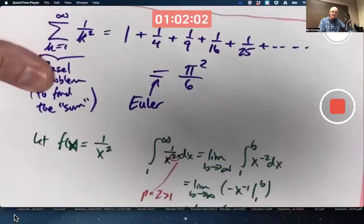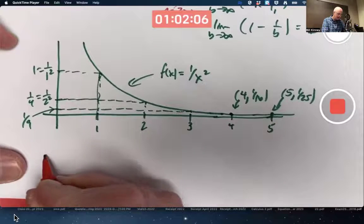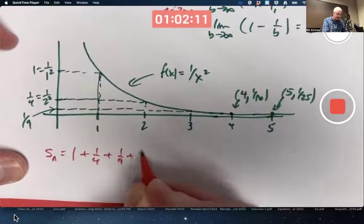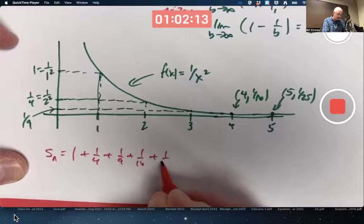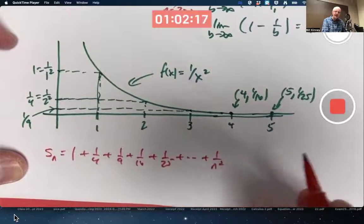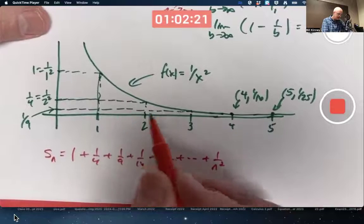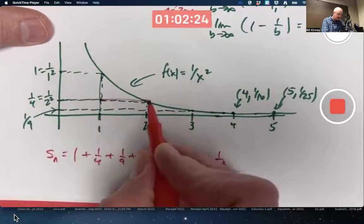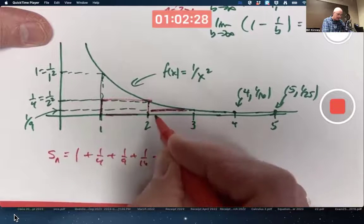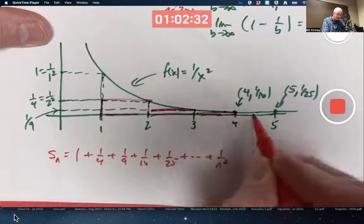Our series has nth partial sum 1 plus a fourth plus a ninth plus a sixteenth plus a twenty-fifth, etc., up through 1 over n squared. That's a finite sum. If I draw in the following rectangles, this one here, this one here, they're getting very short here now, this one here,